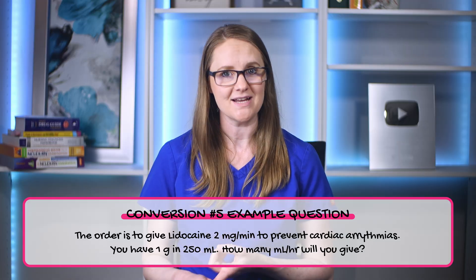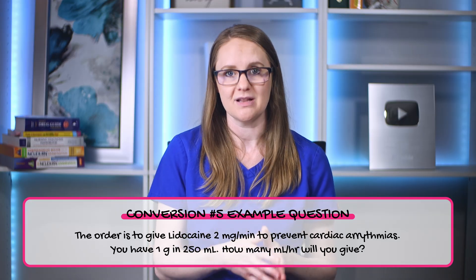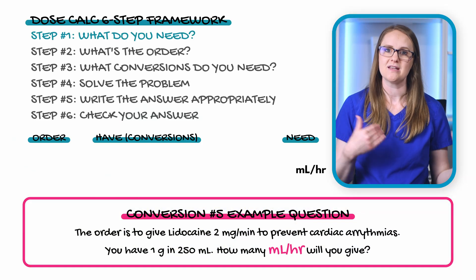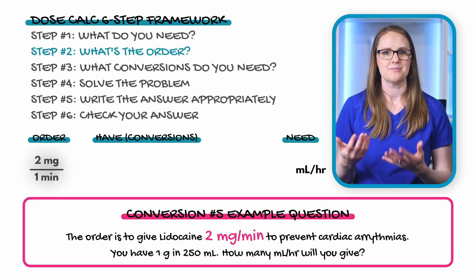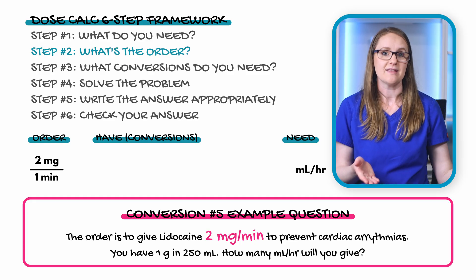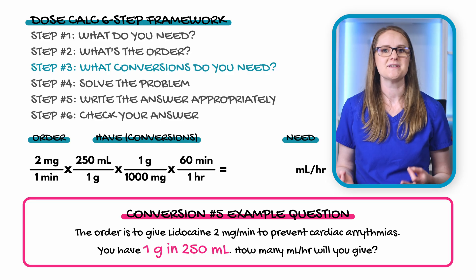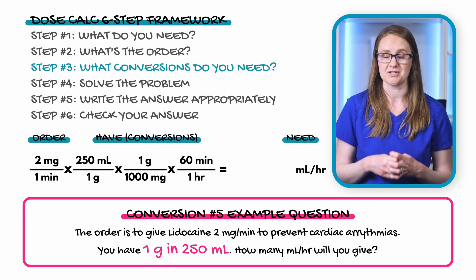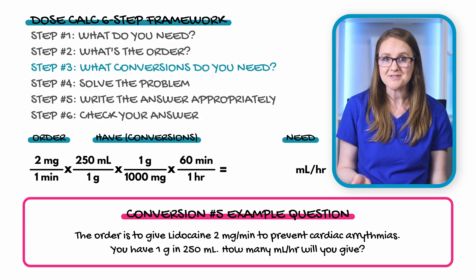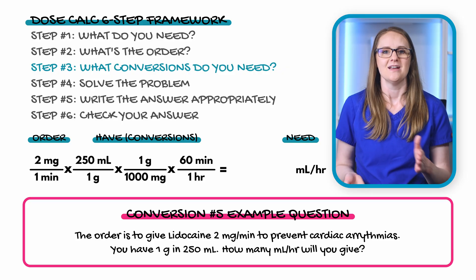Here's our complex problem: the order is to give lidocaine 2 milligrams per minute to prevent cardiac arrhythmias. You have 1 gram in 250 milliliters. How many milliliters per hour will you give? Step one: we need milliliters per hour. Step two: the order is 2 mg of lidocaine per minute. Step three: the lidocaine solution comes in 1 gram per 250 mL solution — that goes in our conversions. Then 1 gram equals 1,000 milligrams, and 60 minutes equals one hour.